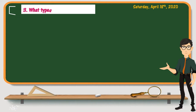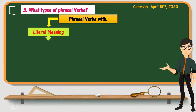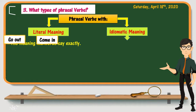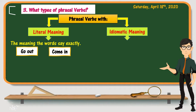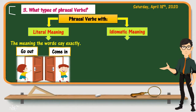Of course, not all verbs change in meaning when they are used with a preposition. So we have to make the difference between two types of phrasal verbs: phrasal verbs with literal meaning and phrasal verbs with idiomatic meaning. Literal meaning is the meaning the words express exactly. For example, verbs like go out and come in have literal meaning which is clear from the words. However, idiomatic meaning is another meaning the words do not say.